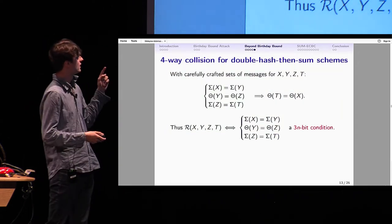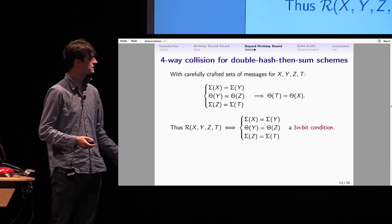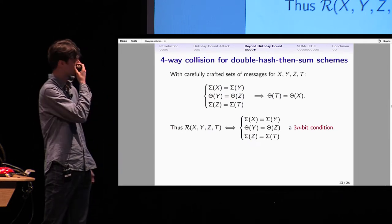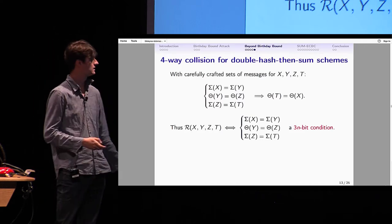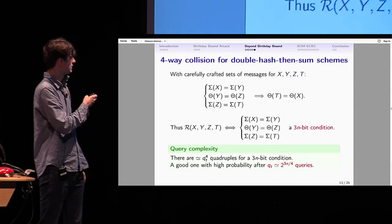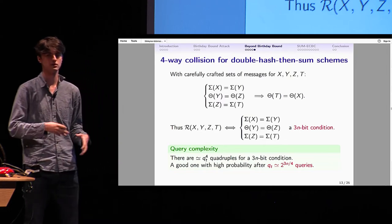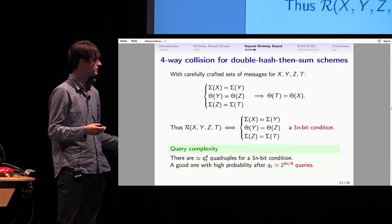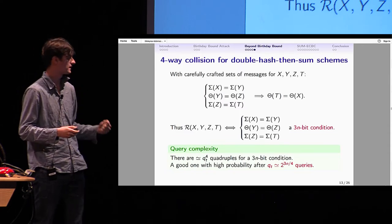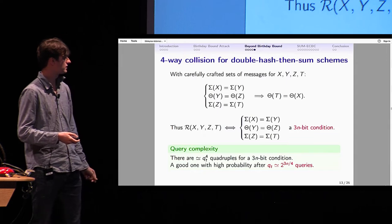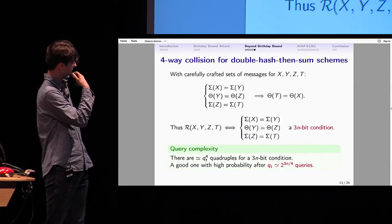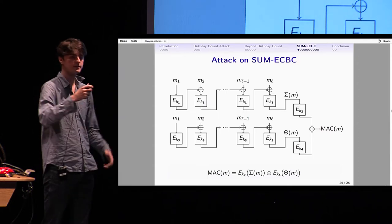And that's not over. When you choose your messages carefully, X, Y, Z, T, you can find redundancy in this relation such that three of the relations implies the fourth one. That means R is only a 3n-bit condition on the quadruple. Now you can understand why we have this complexity. If we give Qt queries to the attacker, the number of quadruples grows like Qt^4. Therefore, we need 2^(3n) quadruples to have one that respects R with good probability. That means we need to give the attacker 2^(3n/4) queries to find such a quadruple.